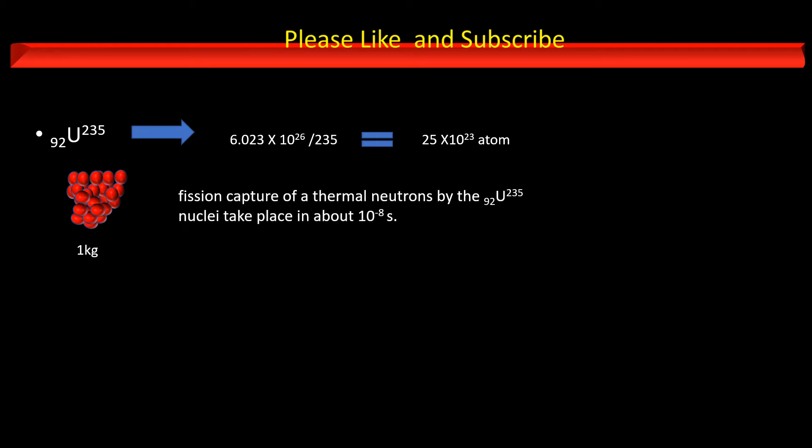Let us consider a neutron causes fission in uranium nucleus. Fission capture of a thermal neutron by the uranium 235 takes place in about 10^-8 seconds. Each of this fission, in turn, will release 2.5 neutrons.